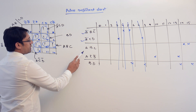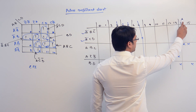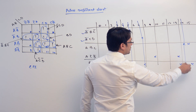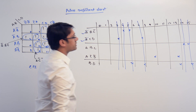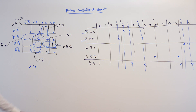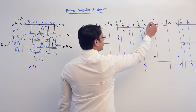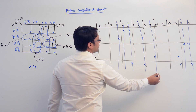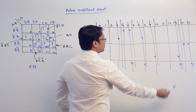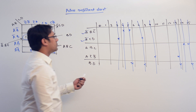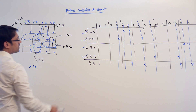If you take A, B, C, then A, B, C is covering 14, which is not covered by anything else. So A, B, C covers 14 and 15. If you take A, C complement, D complement, then it is covering 9, which is not covered by anything else. It is also covering 13. So these four subcubes should be in the solution.